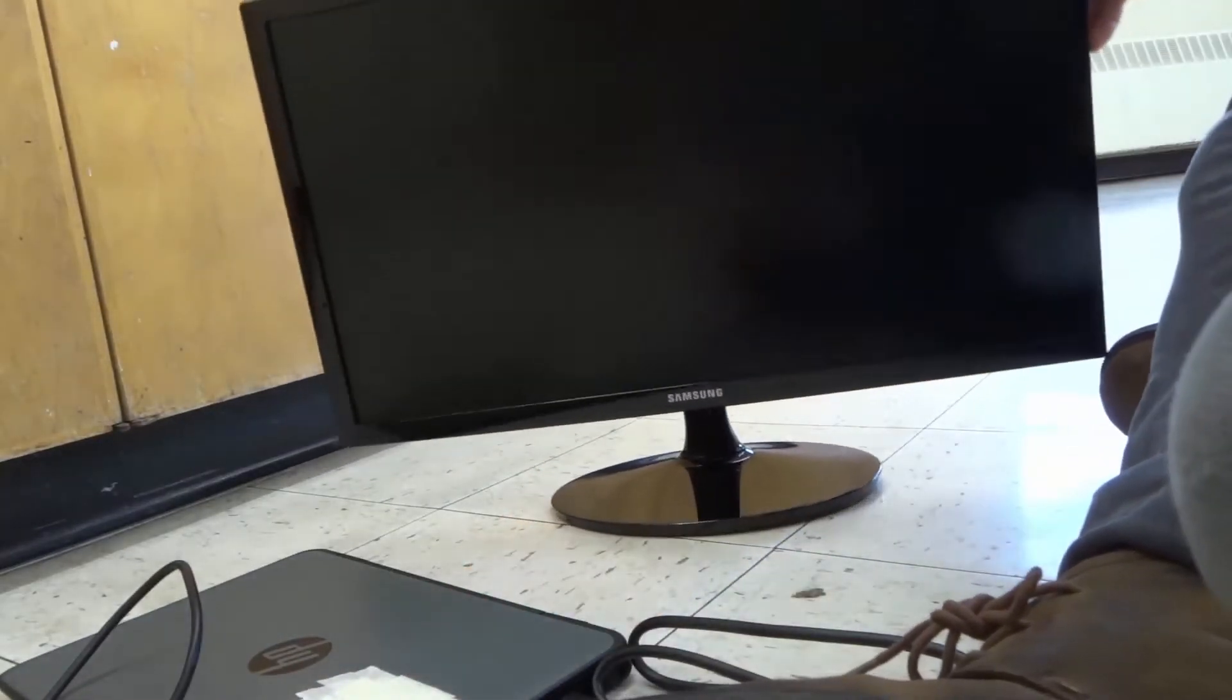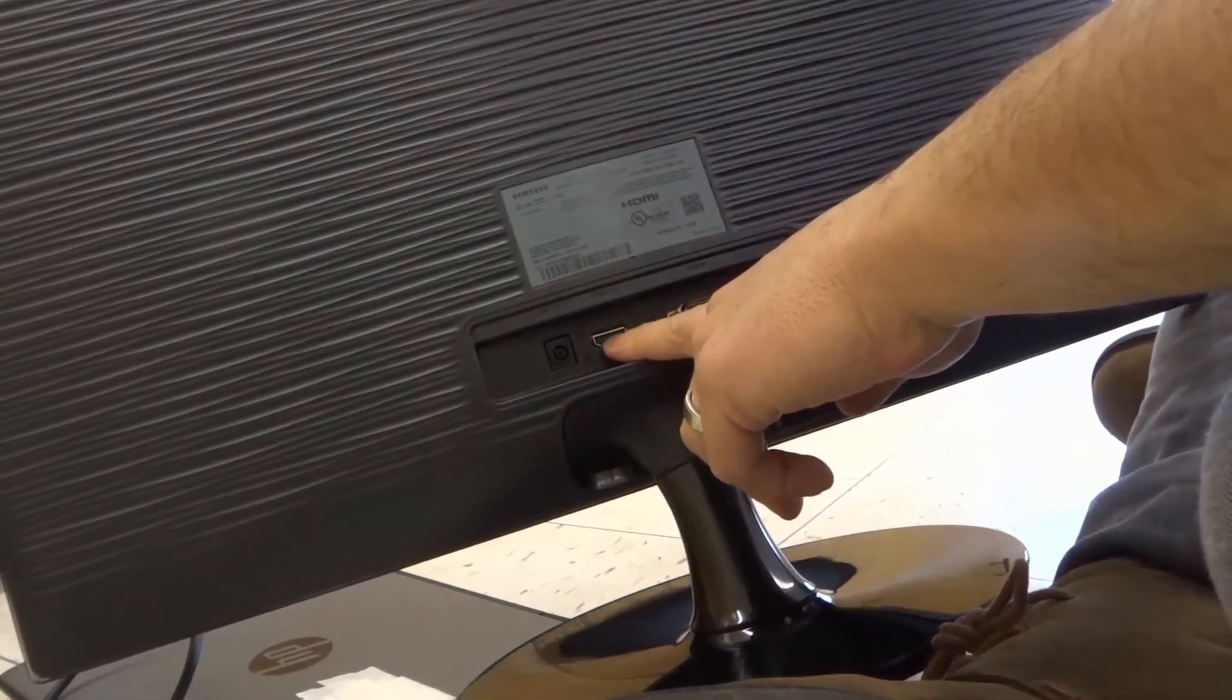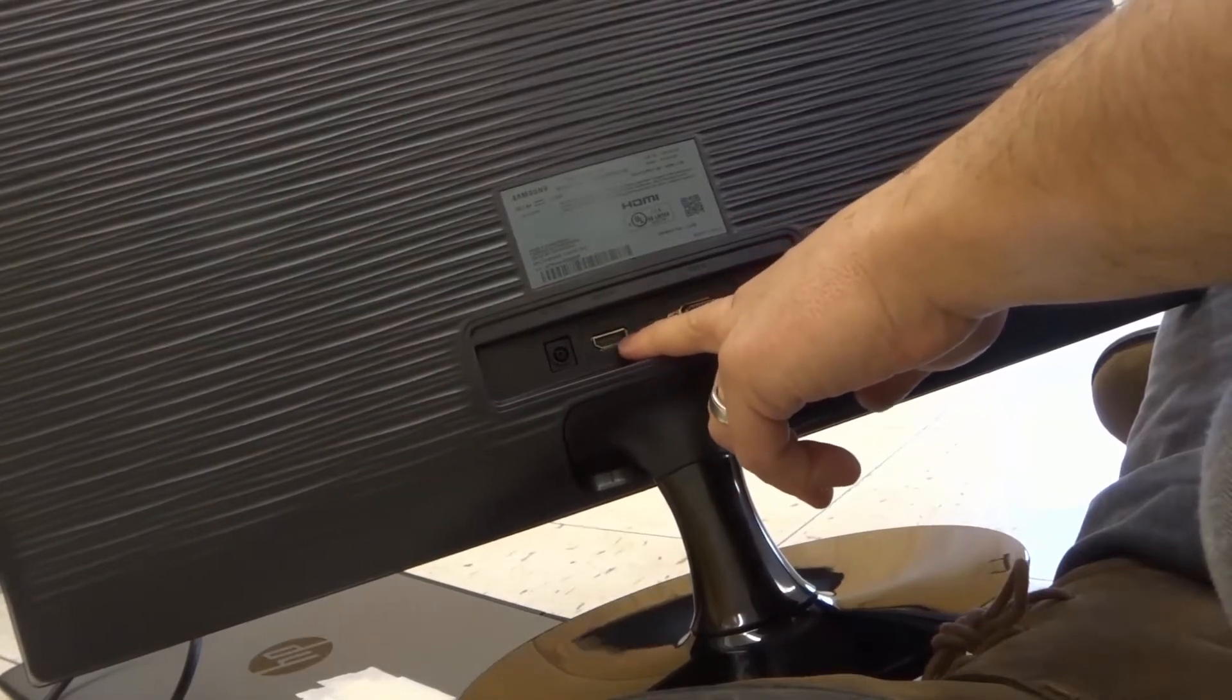Now I'm going to turn the monitor around. And on the back of the monitor, you're going to see a whole bunch of ports. One of those ports is an HDMI in. So it's right here. It looks like the other one right there.